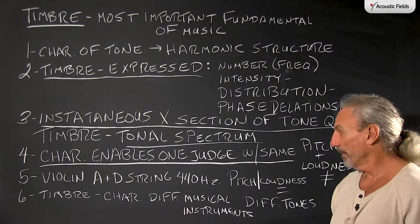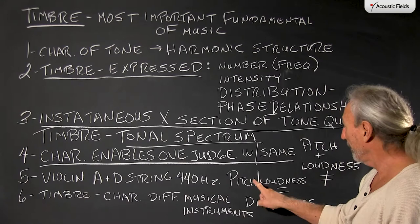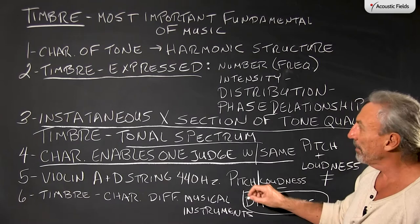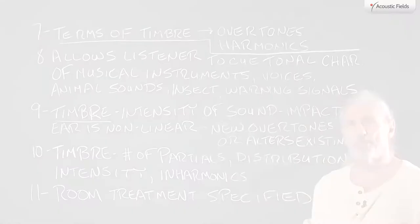So we know that violin A and D string at 440 cycles — if the pitch and loudness are equal, we perceive those as different tones. How do we perceive them as different tones? Because of the timbre quality.